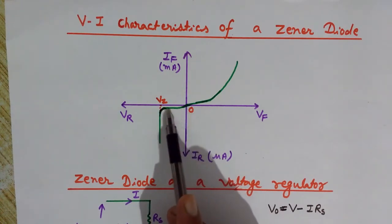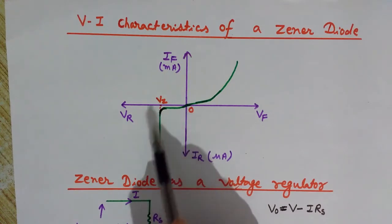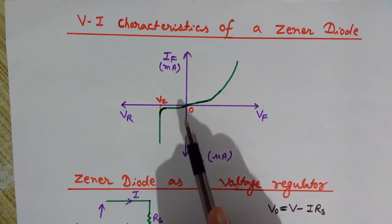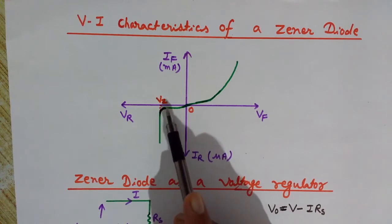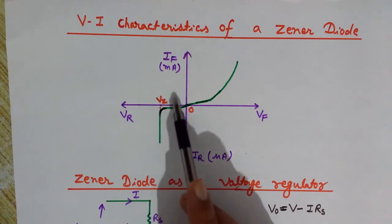It is known as reverse saturation current which is very small in quantity. And at a certain voltage, this is known as Vz, the Zener voltage. This is the breakdown voltage for the Zener diode; it suddenly breaks down the structure.